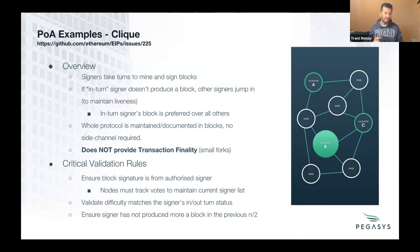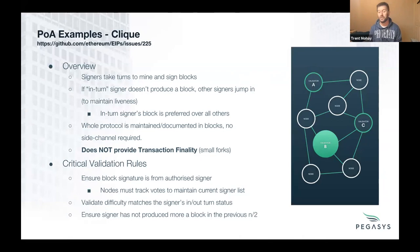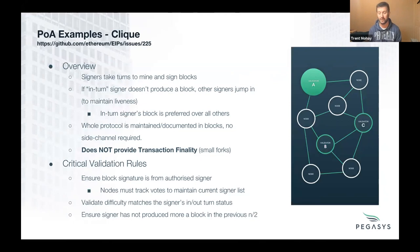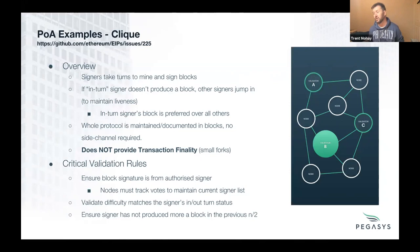Critical validation rules for Clique: you need to make sure the signature in the block - the legitimacy seal - can be proven to come from an authorized signer. Because the signer pool can change via voting, every node must track all signers at every block height to sensibly validate signatures. They also need to validate that the difficulty matches the signer's in-turn or out-of-turn status. Finally, they must ensure the signer has not produced more than one block in the last N/2 blocks, where N is the number of validators - to prevent one miner from running away with the network.